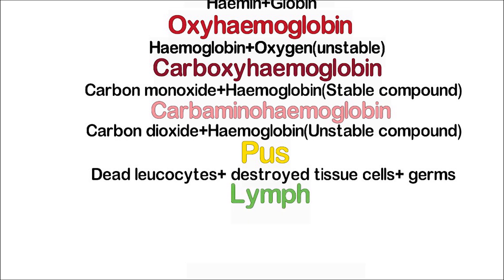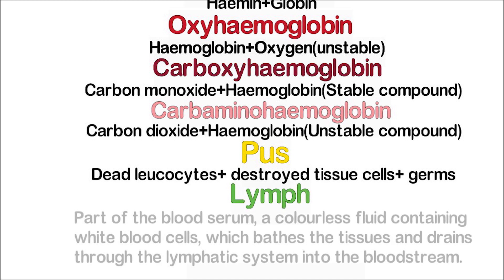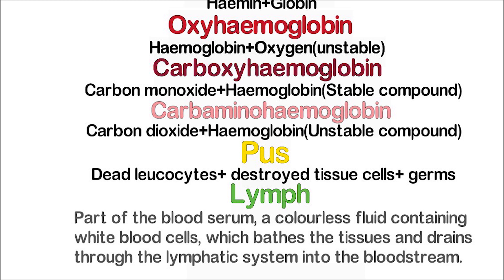Lymph is part of the blood serum which is colorless. This fluid contains white blood cells, bathes the tissues, and ultimately drains through the lymphatic system and joins with the blood circulation.